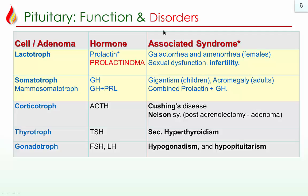Regarding basic pathology and common disorders: the pituitary has six types of cells producing different hormones. The commonest disorder is an adenoma — a benign tumor. The commonest adenoma is the prolactin-producing lactotroph adenoma, also known as prolactinoma. Prolactin causes milk secretion, so it is usually associated with galactorrhea and amenorrhea in females, and sexual dysfunction and infertility in both males and females.